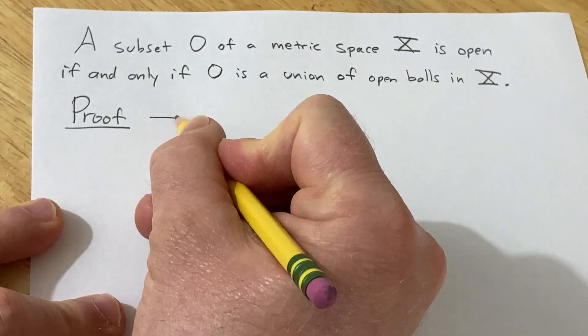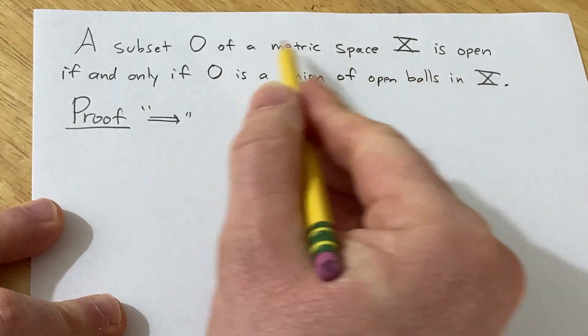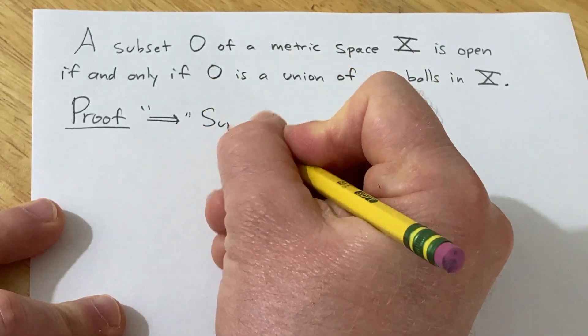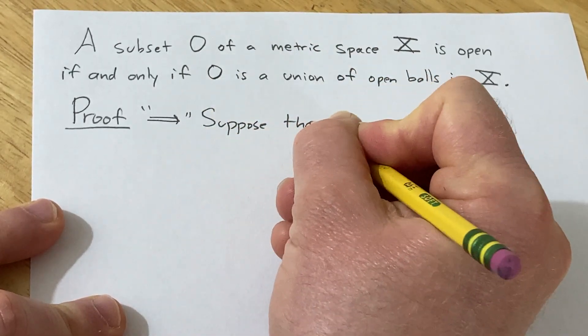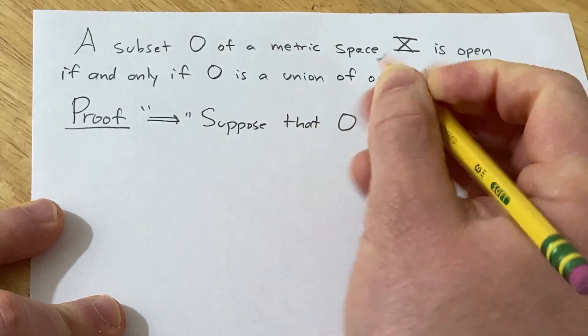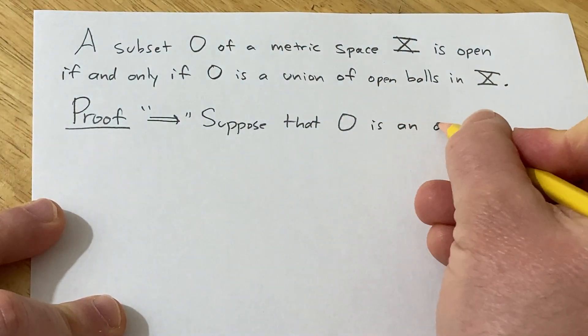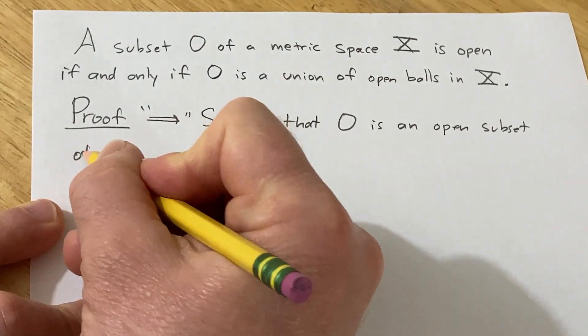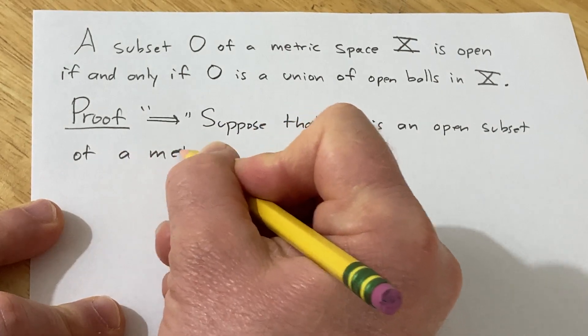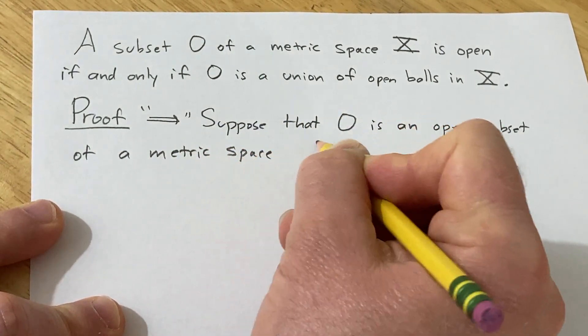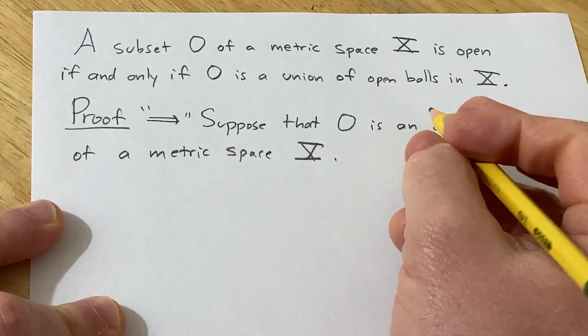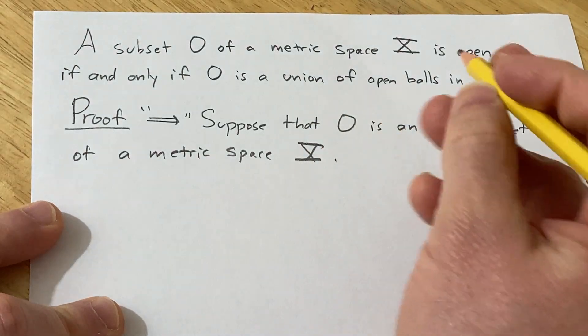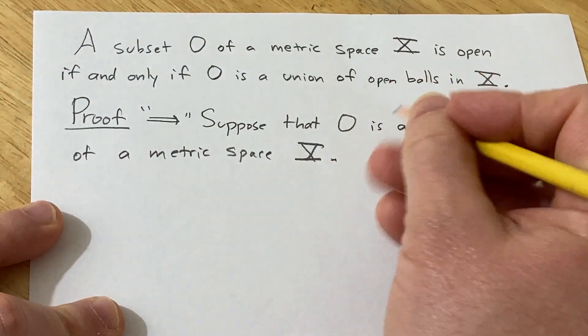So we'll start by proving this direction here. We'll assume that O is an open subset of a metric space X. So suppose that O is an open subset of a metric space X. And basically now we have to show that O is a union of open balls in X. So to do that, we'll do the following.